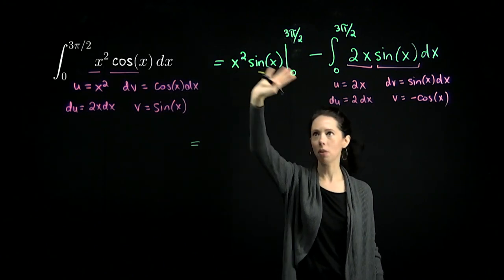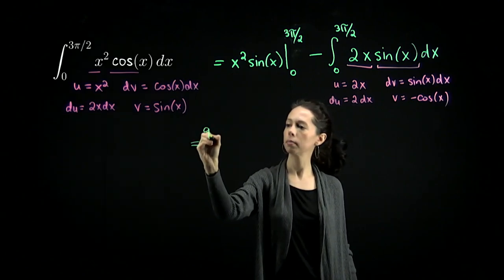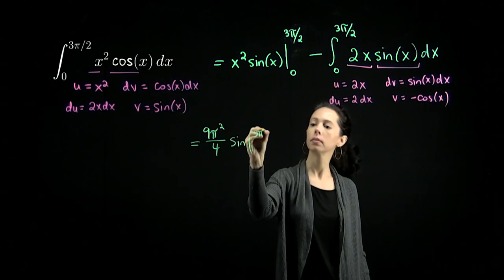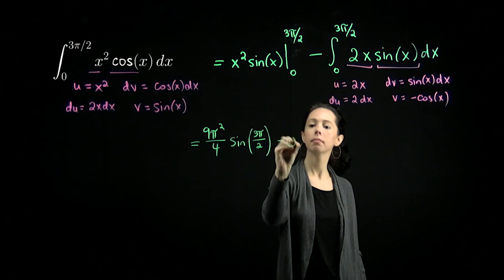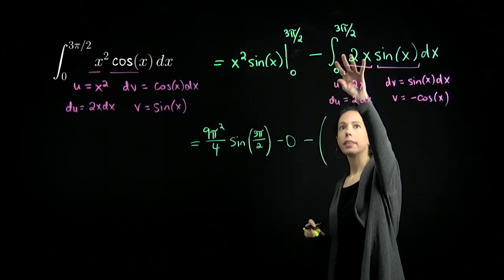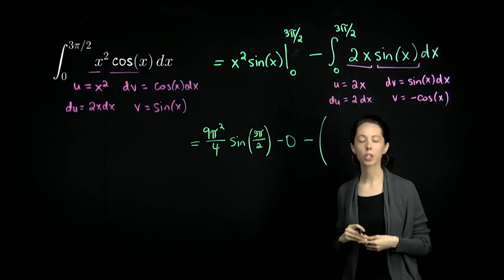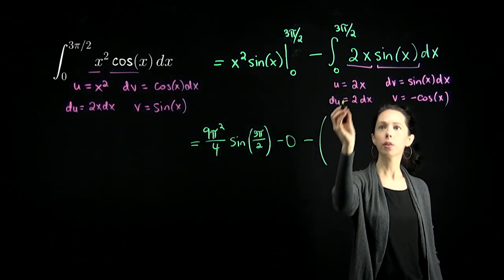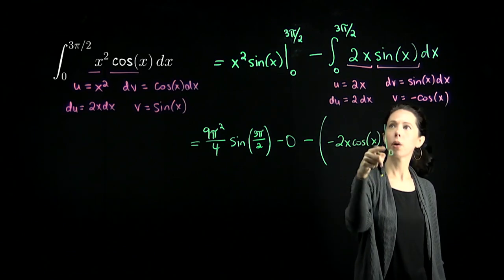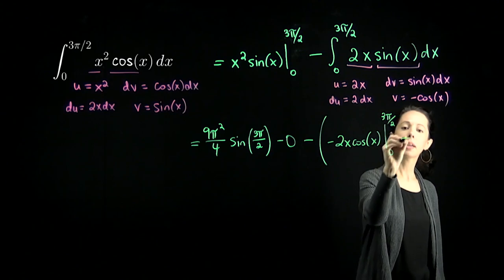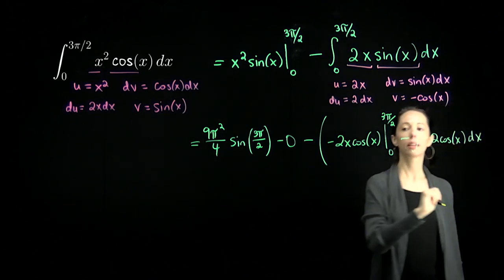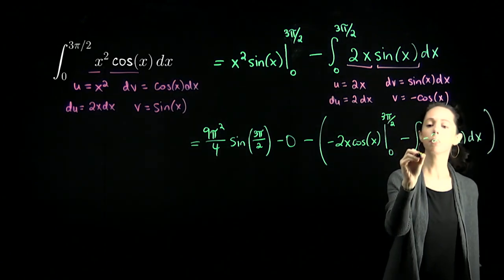Now let's plug in for the first term x squared sine of x evaluated from 0 to 3π/2. We have 9π² over 4 times sine of 3π/2, which is negative 1, minus 0. Keeping the negative out front, this whole integral is replaced by our second iteration of integration by parts: negative 2x cosine of x from 0 to 3π/2, minus the integral from 0 to 3π/2 of negative 2 cosine of x dx.